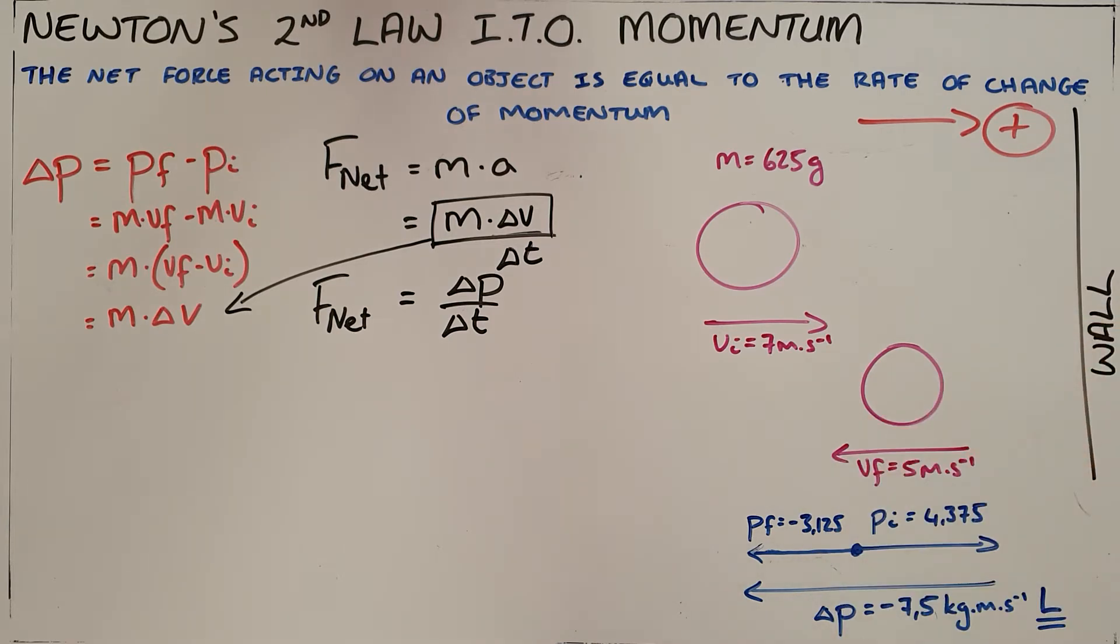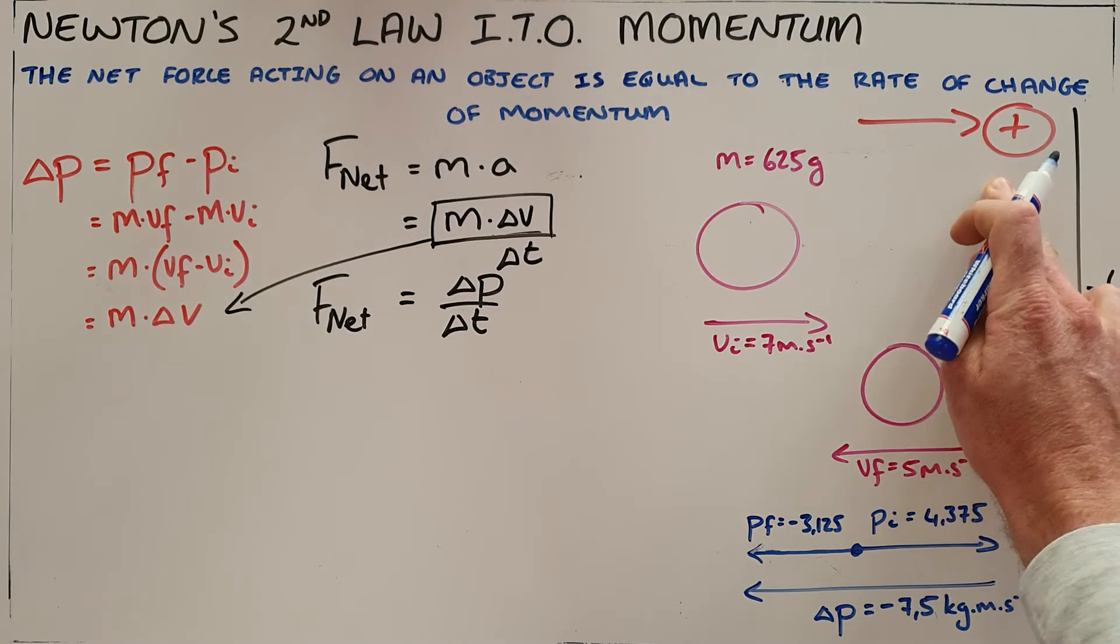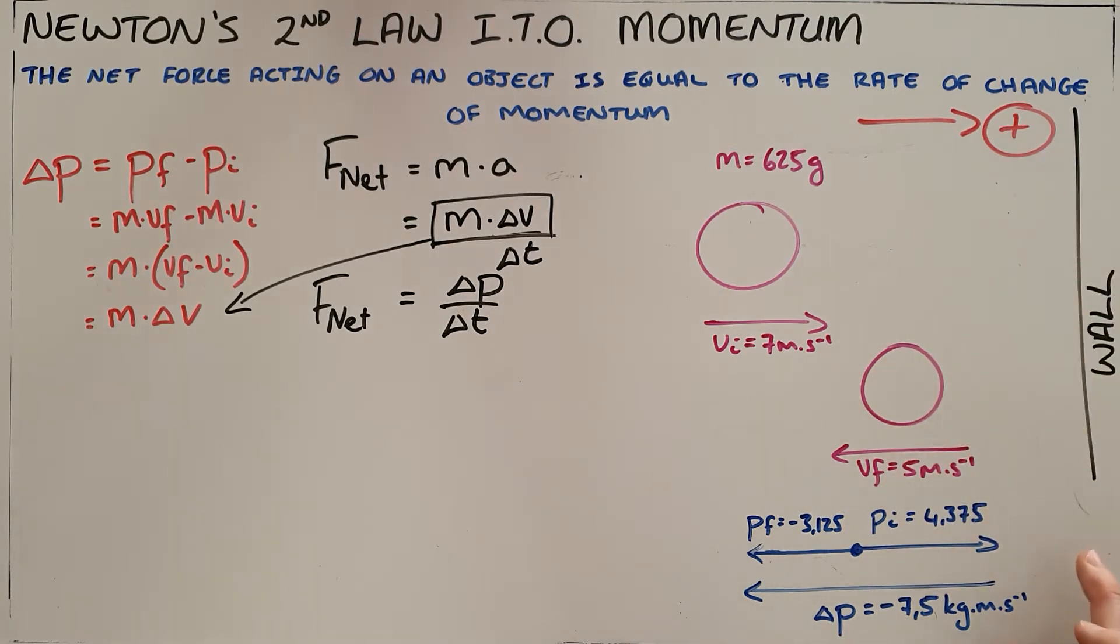striking a wall and bouncing off that wall, we showed with a vector diagram that there was a change in momentum of negative 7.5 kilogram meters per second. That negative obviously refers to that being to the left or in the opposite direction to our initial positive direction.